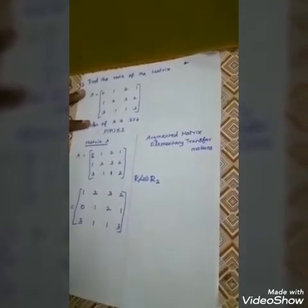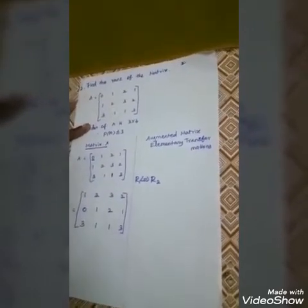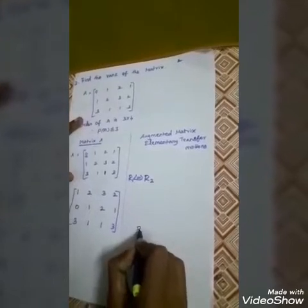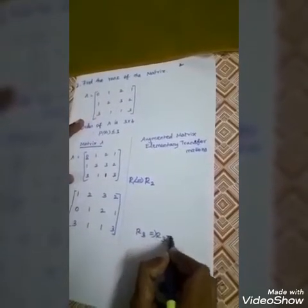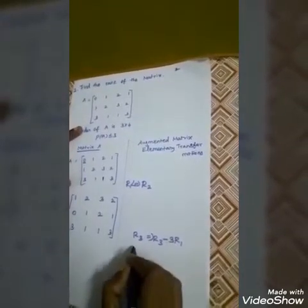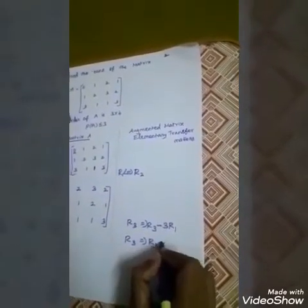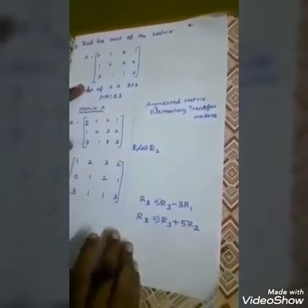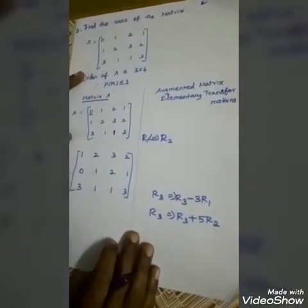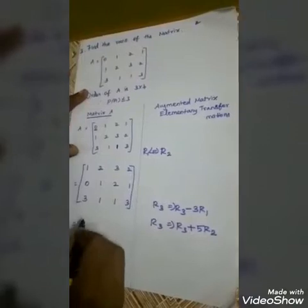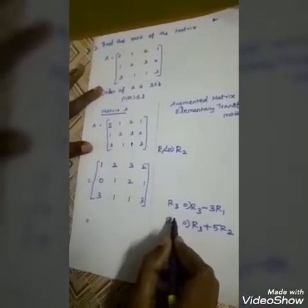Now we can do the elementary transformations. You can use any other procedure. I am taking R3 equals R3 minus 3R1, then one more: R3 equals R3 plus 5R2. We need to get the Echelon form, then count the number of non-zero rows. That is why we are doing these elementary transformations.